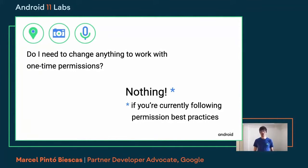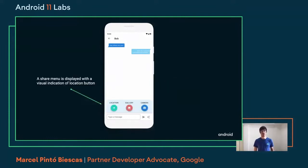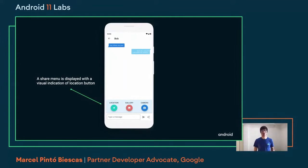Let me explain with a real use case. Let's imagine we have a chat application where Bob is asking Alice to share her location. Alice sees a share button that hints at the possible actions. This displays a menu that shows several options, clearly separated so the user might not accidentally click on one. The important point is that you avoid users accidentally clicking buttons that might request a permission — you want to ensure the user allows the permission willingly.